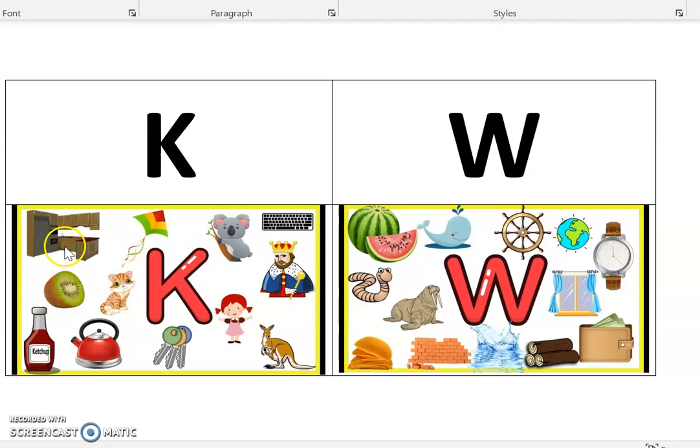You have kitchen, kite, koala. I'd be surprised if any of you guys had a koala in your house. Maybe a stuffed animal version, though. A keyboard, a king, a kid, a kangaroo, keys, kettle, ketchup, kiwi, kitten.